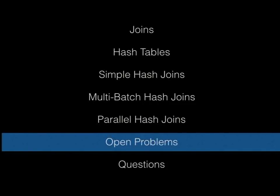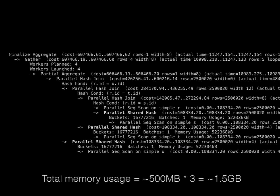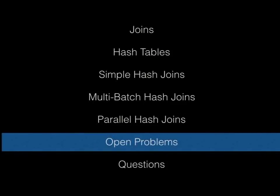Ashutosh asks how it would affect things without the aggregate. The reason I put the aggregate there was to measure just hash join speed — without it the gather node would have to spit out millions of rows, which would make measurements harder to understand. Now, a few minutes left — here are some open problems for hash joins in general.